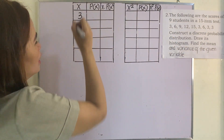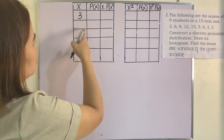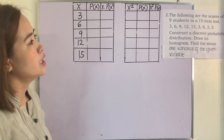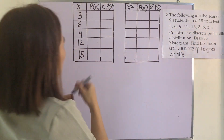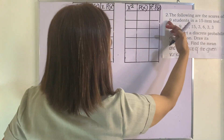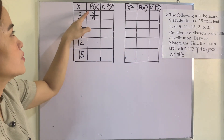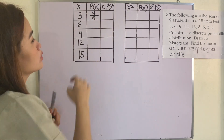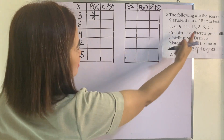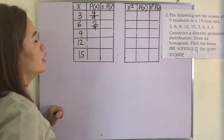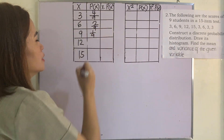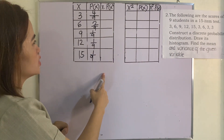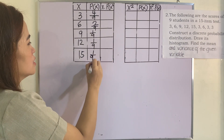Our distinct values are 3, 6, 9, 12, and 15. How many times does 3 appear? It appears 4 times, so the probability is 4 over 9. How many numbers do we have in total? We have 9. The number 6 appears 2 times, so that is 2 over 9. The numbers 9, 12, and 15 each appear once, so each has a probability of 1 over 9. To verify: 4 + 2 + 1 + 1 + 1 = 9, so the sum is 9 over 9 — that's correct, confirming this is a valid probability distribution.